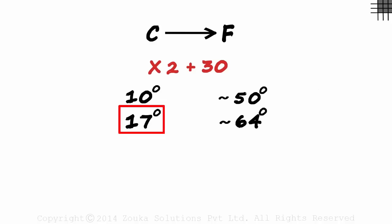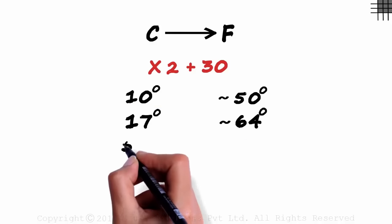And 17 degrees Celsius as 62.6 degrees Fahrenheit. Almost equal. The higher the temperature, the bigger will be the difference.